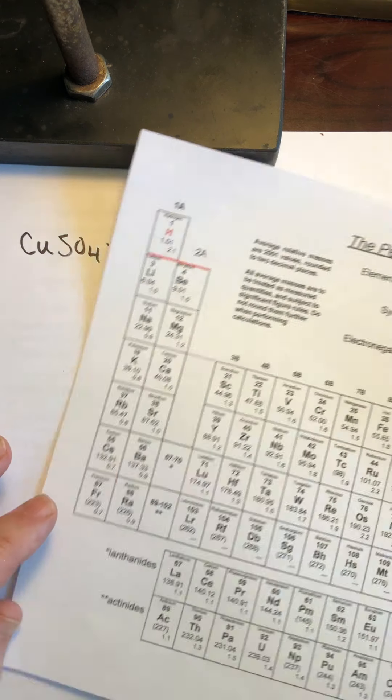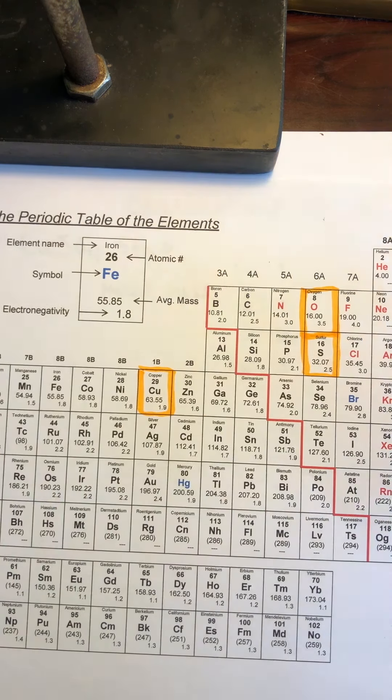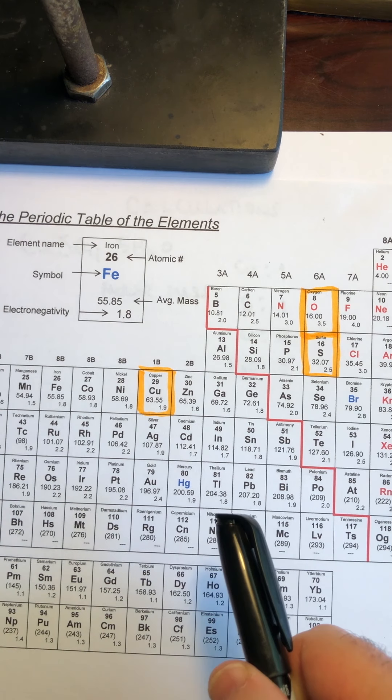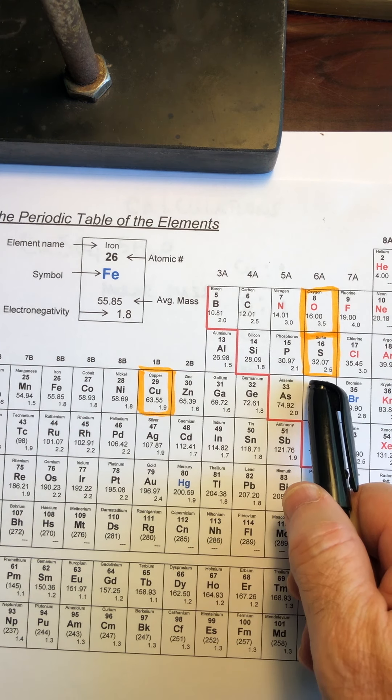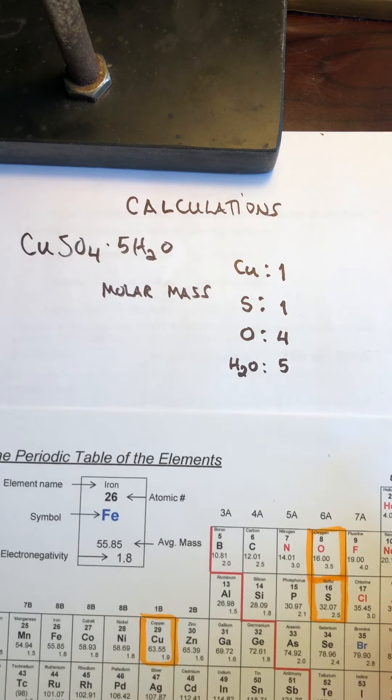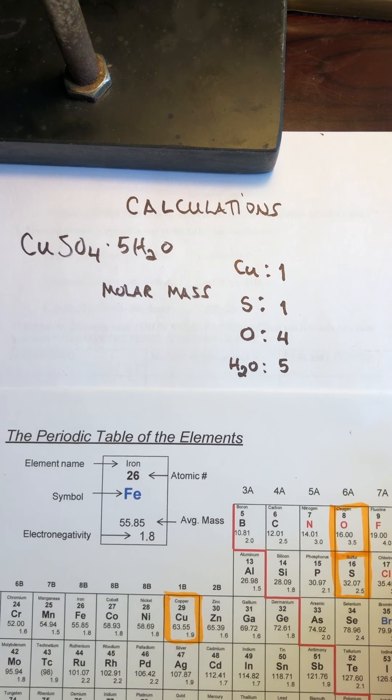We have to go to our periodic table, and I've taken the liberty here of highlighting the copper, the oxygen, and the sulfur, so we can get those numbers very quickly. Let me roll it down a little bit here.